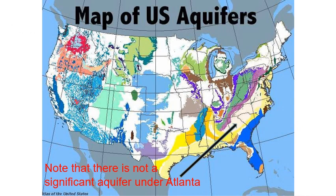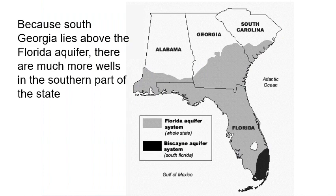Here's the map of U.S. aquifers. There's the Ogallala in blue. In our part of Georgia, there isn't a significant aquifer underneath Atlanta. Even though it rains all the time, we don't actually have a lot of groundwater — most of our water stays on the surface. In South Georgia, once you get south of what they call the fall line in the middle of the state, the land is flatter and you're on top of the Florida aquifer, so people in South Georgia can use wells a lot more than people in North Georgia.